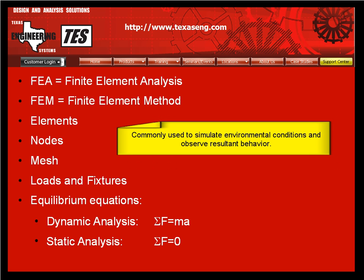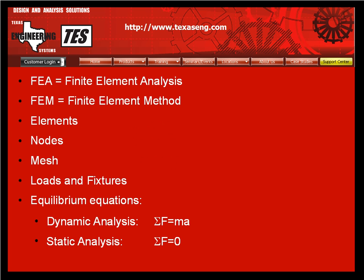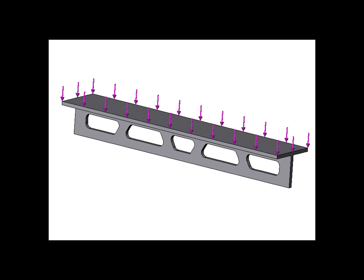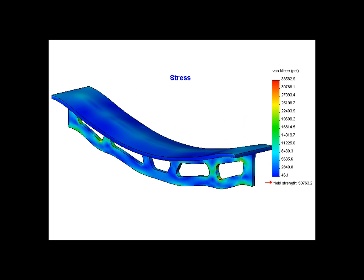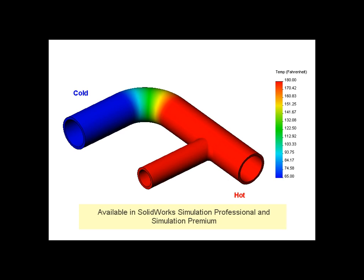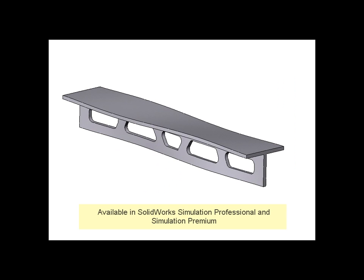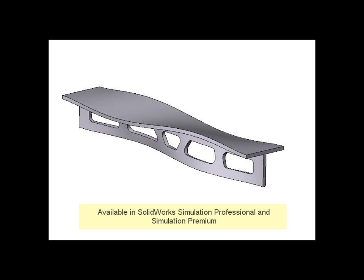The finite element method is commonly used to simulate environmental conditions and examine the resultant behavior on a structure. Simulation conditions can be forces or pressure. The resultant behavior would be the deflection and stress or strain. Other conditions include thermal loads, where you can get the temperature distribution and thermally induced stress, or vibration loads where you can observe the vibration shape and frequency.